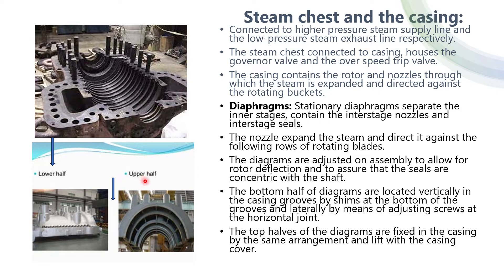What you see at the bottom is the upper half of the casing. The right hand side shows the inner housing whereas the left hand side shows the outer housing of the casing. The steam chest is connected to the inlet of the steam, and from there the steam goes to the casing.